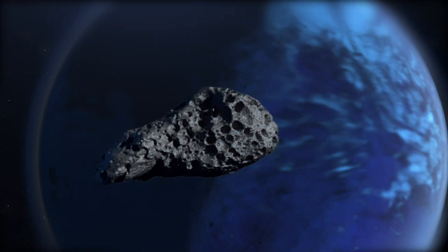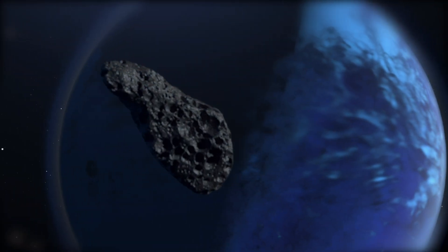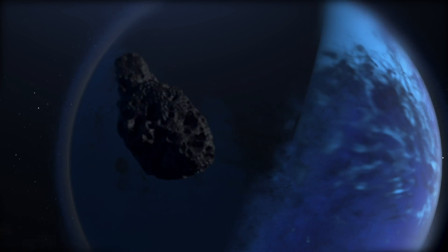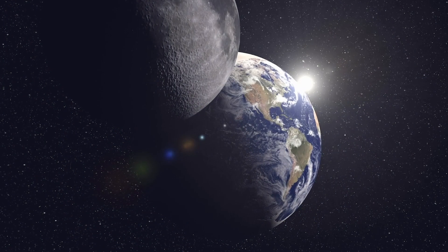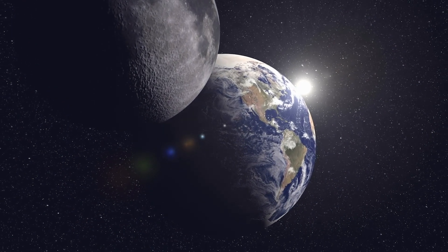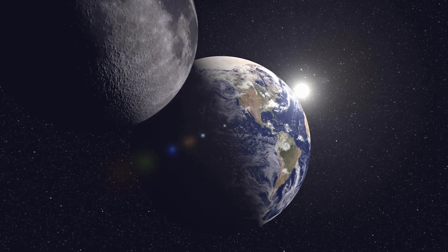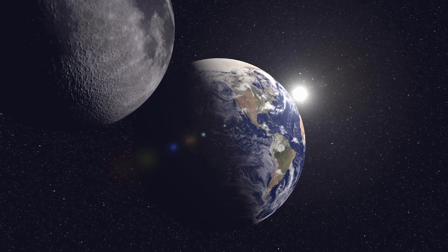Niku's most remarkable unexplained characteristic is its unusual orbit on a plane tilted 110 degrees from the solar system. Unlike most other objects which orbit in the same direction as the solar system, Niku's orbit is in retrograde, hence the rebellious nickname.